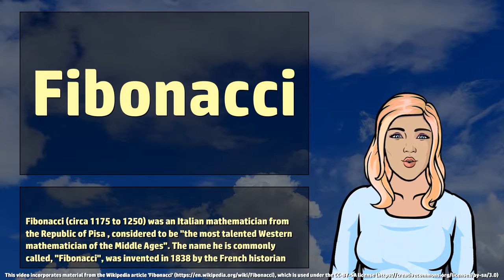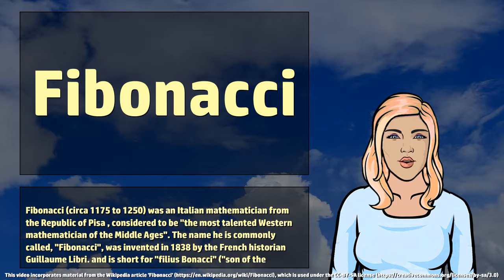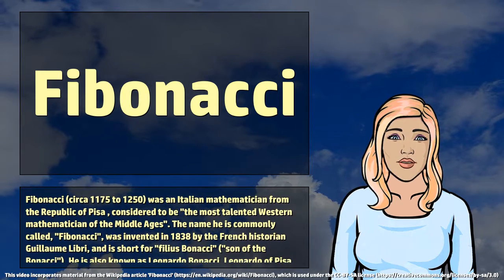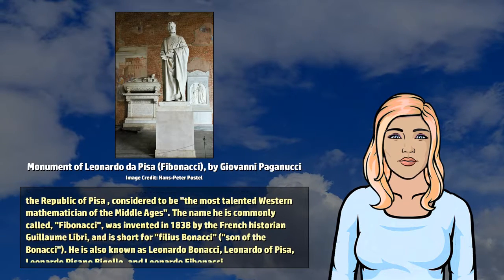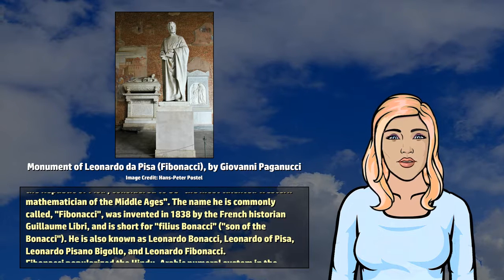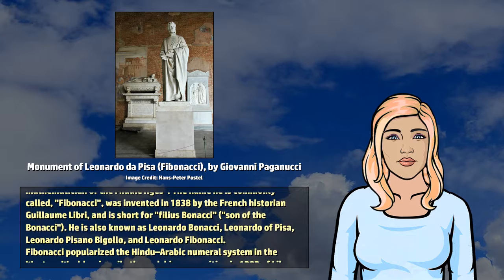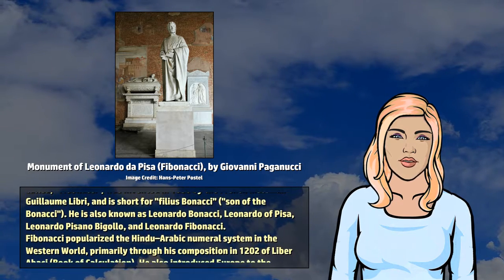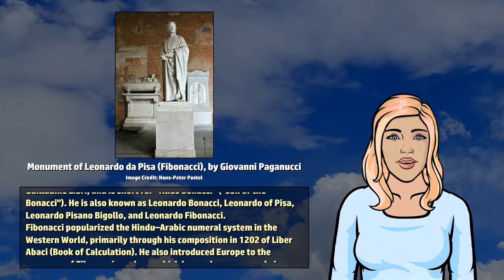Fibonacci, circa 1175 to 1250, was an Italian mathematician from the Republic of Pisa, considered to be the most talented Western mathematician of the Middle Ages. The name he is commonly called, Fibonacci, was invented in 1838 by the French historian Guillaume Libri, and is short for Filius Bonacci, son of the Bonacci. He is also known as Leonardo Bonacci, Leonardo of Pisa, Leonardo Pisano Bigollo, and Leonardo Fibonacci.